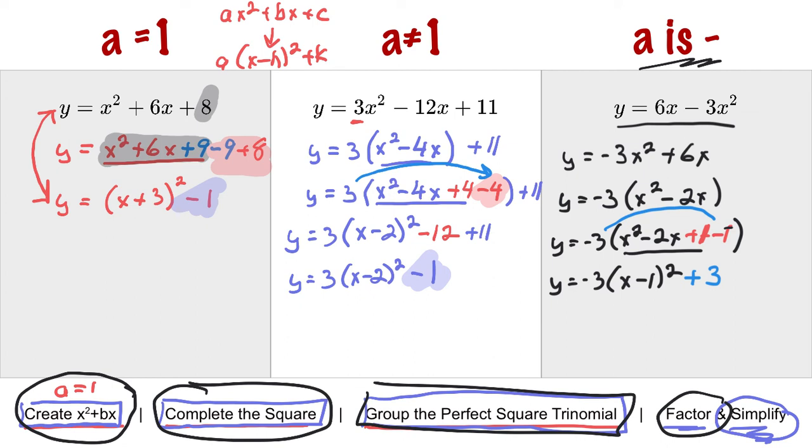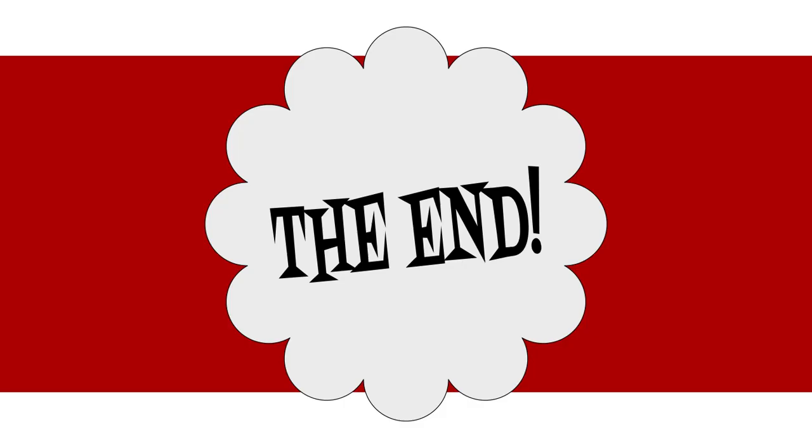So that is how you move from standard form to vertex form using a process called completing the square. Thanks for watching.